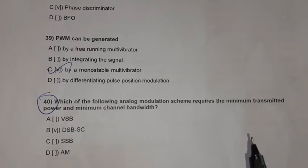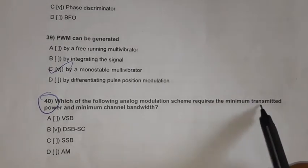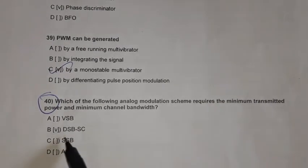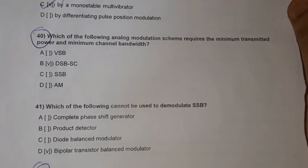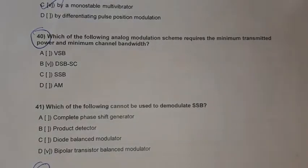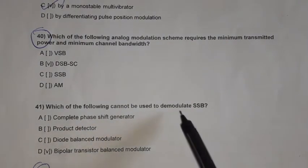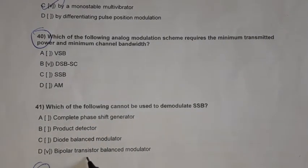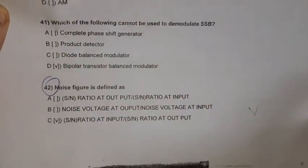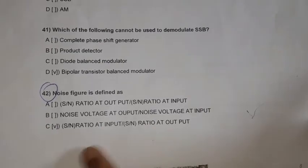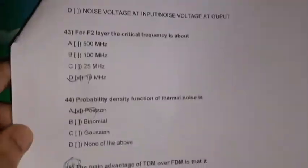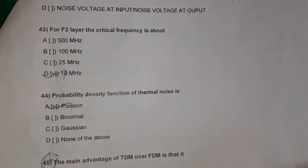Question 40: Which of the following analog modulation schemes requires minimum transmitted power and minimum channel bandwidth? The answer is double sideband suppressed carrier (DSB-SC). Question 41: Which of the following cannot be used to demodulate SSB? The answer is a bipolar transistor balanced modulator.